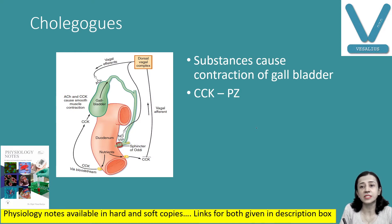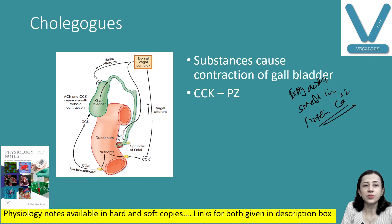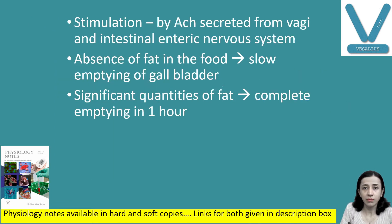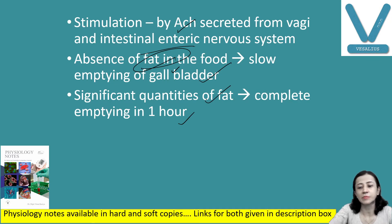There is one terminology: cholagogues. Cholagogues are substances that cause contraction of the gallbladder and flow of bile. Commonly, fatty acids, acids in the small intestine, products of protein digestion, and calcium ions are all cholagogues. They cause increased contraction of the gallbladder and flow of bile by increasing release of cholecystokinin from the duodenum. Also, stimulation by acetylcholine — when the vagus nerve gets stimulated, acetylcholine released in the enteric nervous system also causes release of bile. When fat is not present in food, emptying of the gallbladder is slow, but if the amount of fat is significant, complete emptying takes place in one hour.